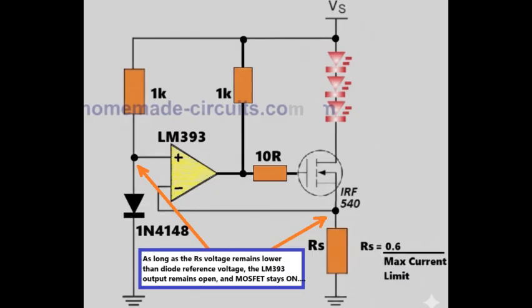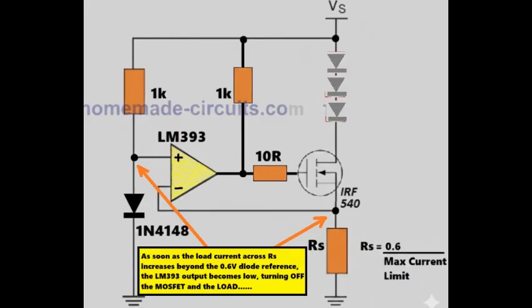Now let us understand what happens when current increases. When the load current increases, the voltage across the sense resistor also increases. The moment this voltage reaches the same level as the reference voltage, the comparator LM393 detects this condition immediately.